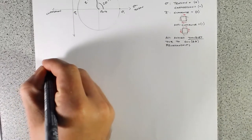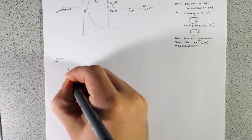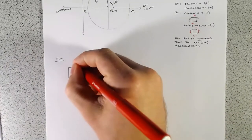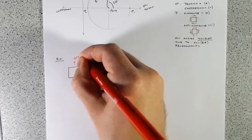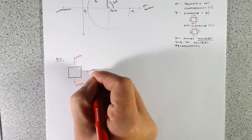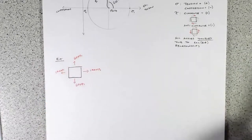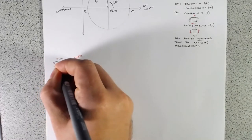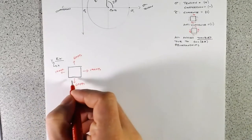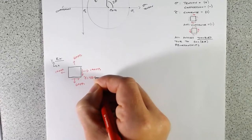So let's draw up this example. Let's say we've got a stress state: sigma y equals 60 MPa, sigma x equals 100 MPa, and a shear stress tau equals 48 MPa.